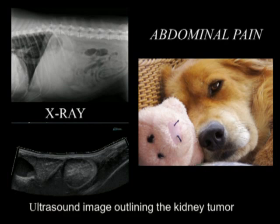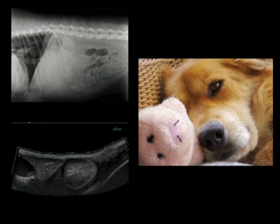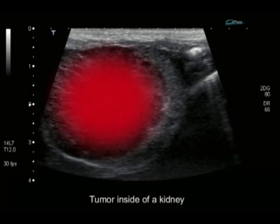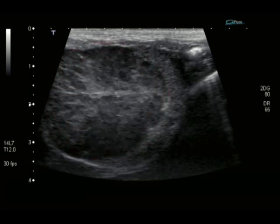In this older dog with abdominal pain, an x-ray couldn't clearly give us an answer. But on ultrasound, we could clearly see that there was a mass in the left kidney.